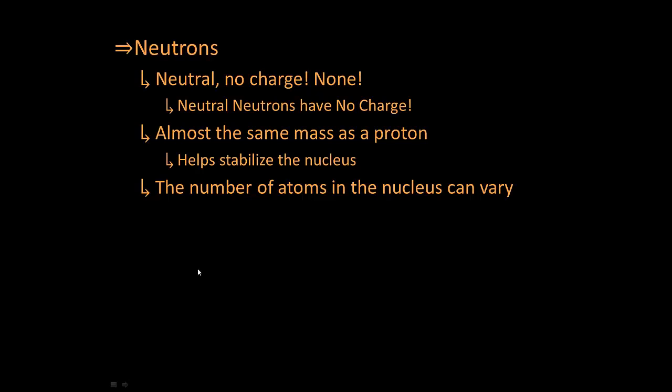So the number of... that says the number of atoms in the nucleus can vary. What that's supposed to say is the number of neutrons in the nucleus can vary. That means it's changeable. It's not fixed.